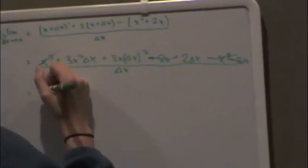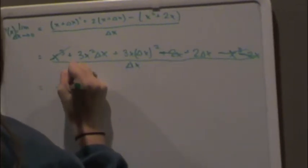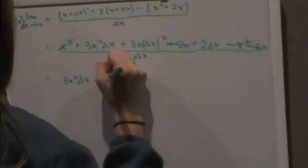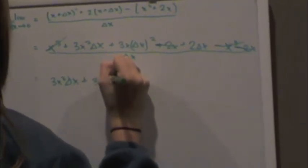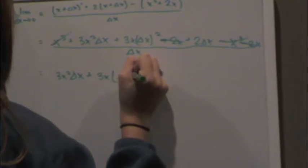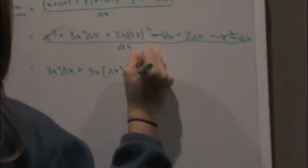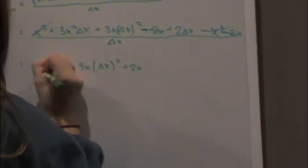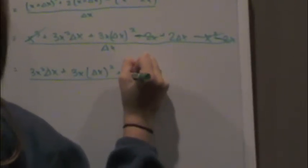So you'd be left with 3x squared change in x plus 3x change in x squared plus 2 change in x over change in x.